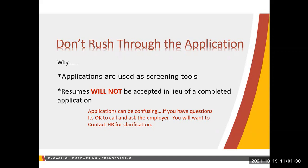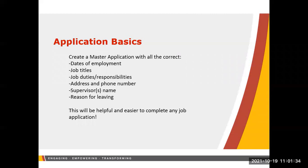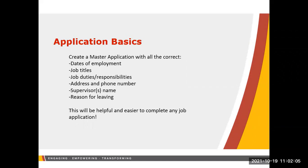Some basics for the application: one rule of thumb is to have your application be as thorough as possible, with your resume containing only the pertinent information for that particular job. You want to create a master application. For government jobs using a portal like NeoGov, you can use the same basic application. For most private employers, they have their own individualized portal. They're asking for your work history, dates of employment, job titles, address, and phone number. Your address goes in the application and does not go on your resume. They'll also ask for supervisors and reasons for leaving.